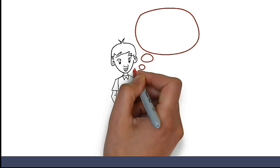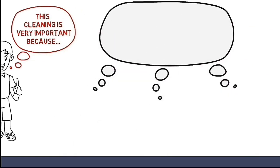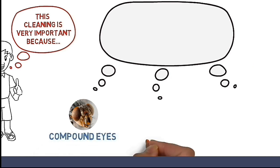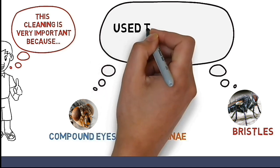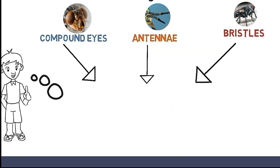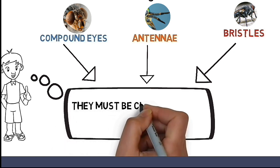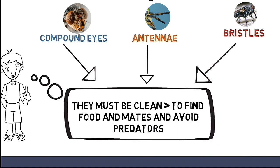This cleaning is very important because the compound eyes, antennae, and bristles on the legs and body of the flies are used to sense the world around them. Therefore, they must be cleaned in order to help them accurately find food and mates and avoid predators.